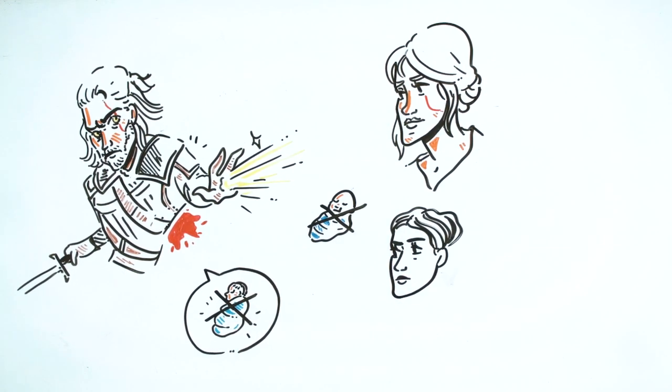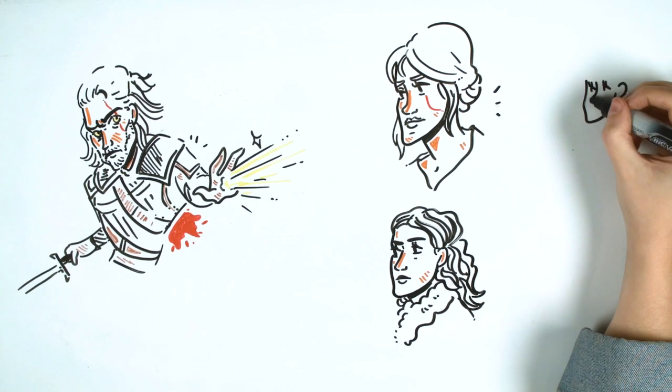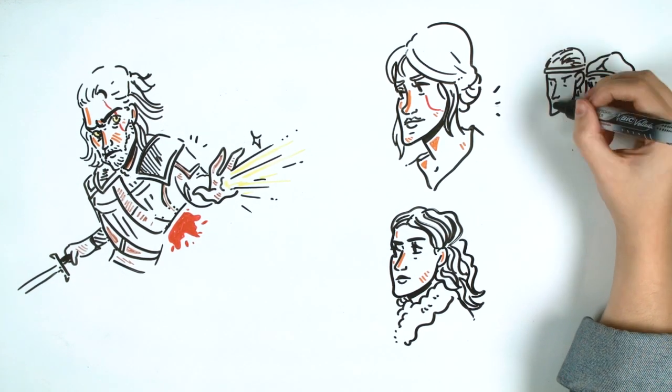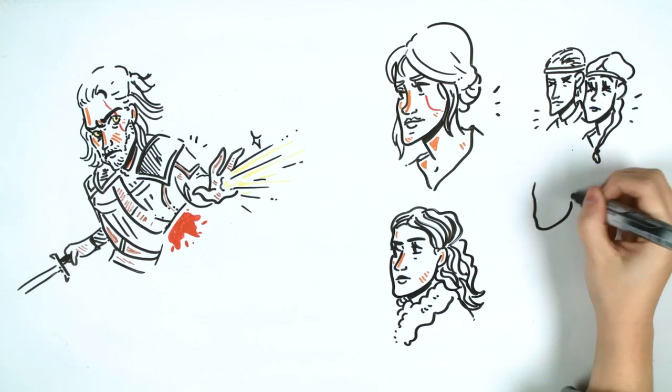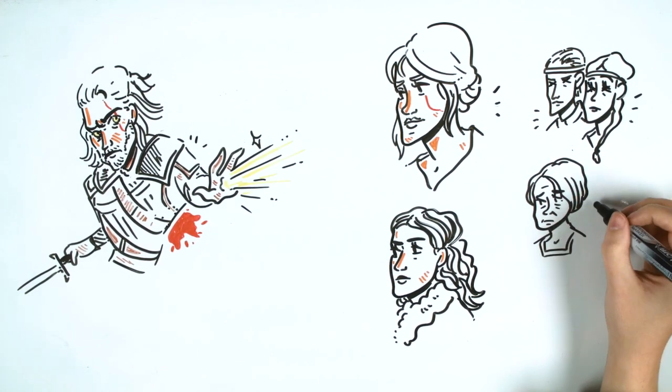His great love is Yennefer, the sorceress of Vengerberg. Let's continue with Ciri. This young lady is the princess of Cintra, daughter of Pervetta in the mirror. But when she was a child, her parents were lost at sea, and later her grandmother was killed.